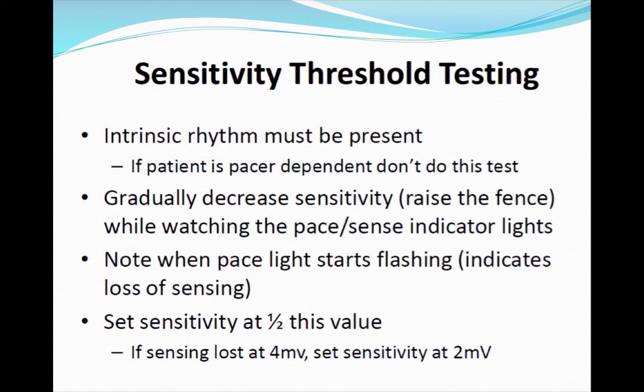These are the steps for testing the sensitivity threshold. The patient must have an intrinsic rhythm, then gradually decrease the sensitivity — raise the fence — while watching the pace and sense indicator lights on top of the pacer. Note when the pacing lights start to flash, indicating loss of sensing. The sensitivity is then set at half of that value; so if sensing was lost at 4 millivolts, set the sensitivity at 2 millivolts.